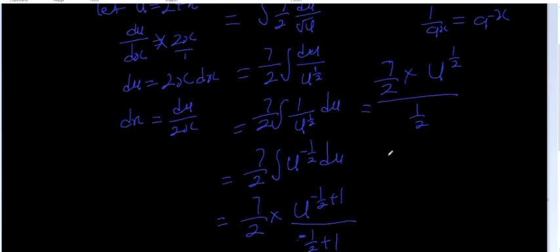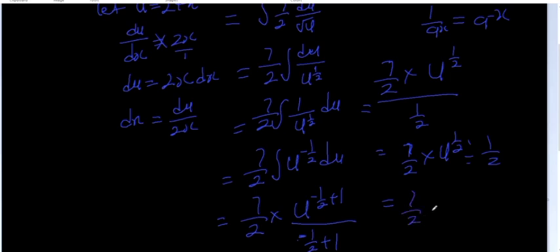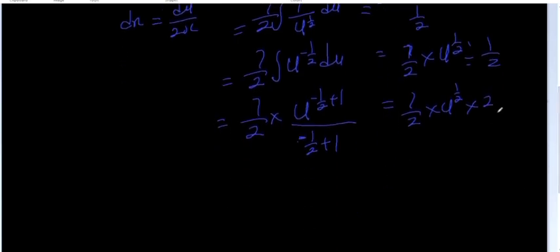The answer gives you 7 over 2 times u raised to power half divided by half. Dividing by half is multiplying by 2 over 1, so the 2s cancel and you are left with 7 times u raised to power half.